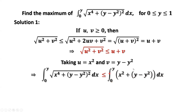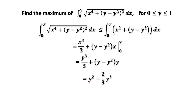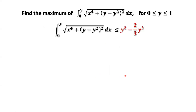We simplify the right-hand side of this inequality. This is a simple integral. The antiderivative is x³/3 + (y − y²)·x. Evaluating from 0 to y², we get y⁶/3 + (y − y²)·y². Simplifying further, we have y² − (2/3)y³. This implies the integral is less than or equal to y² − (2/3)y³.